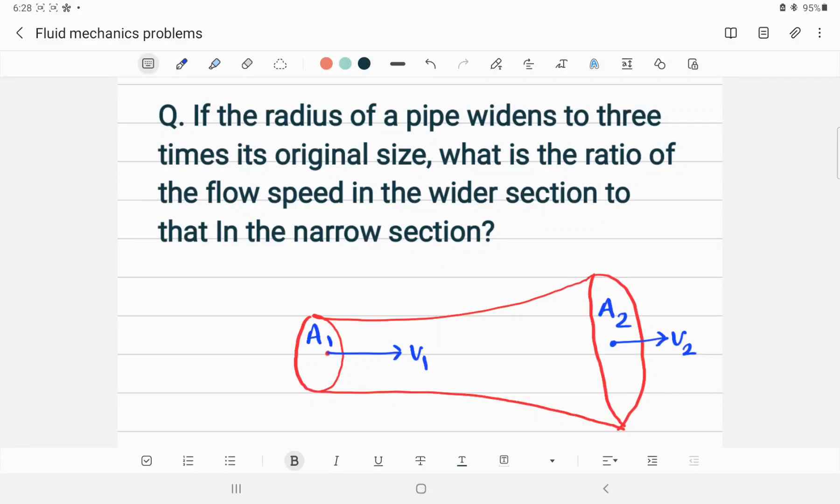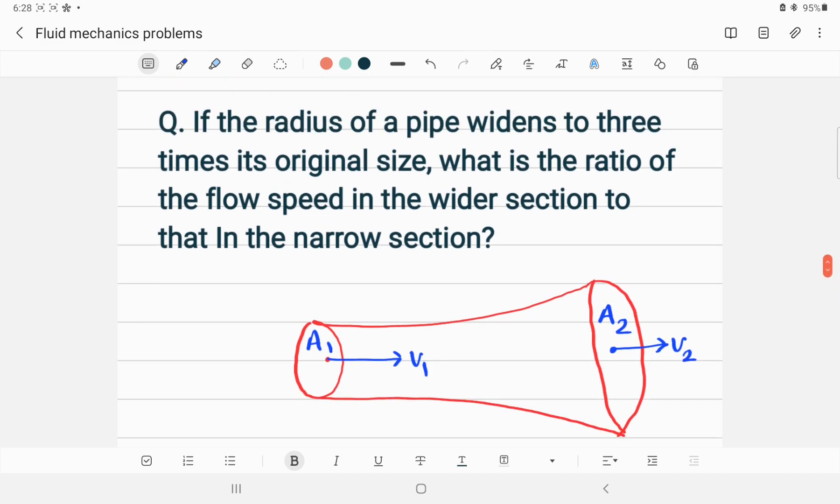If the radius of a pipe widens to three times its original size, what is the ratio of the flow speed in the wider section to that in the narrow section? So this is a water pipe. The radius right here, suppose, is r1, and the radius here is r2. This section is narrower in comparison to this one, and according to the question, this broader section widens about three times—exactly three times—the original size right here at the beginning.